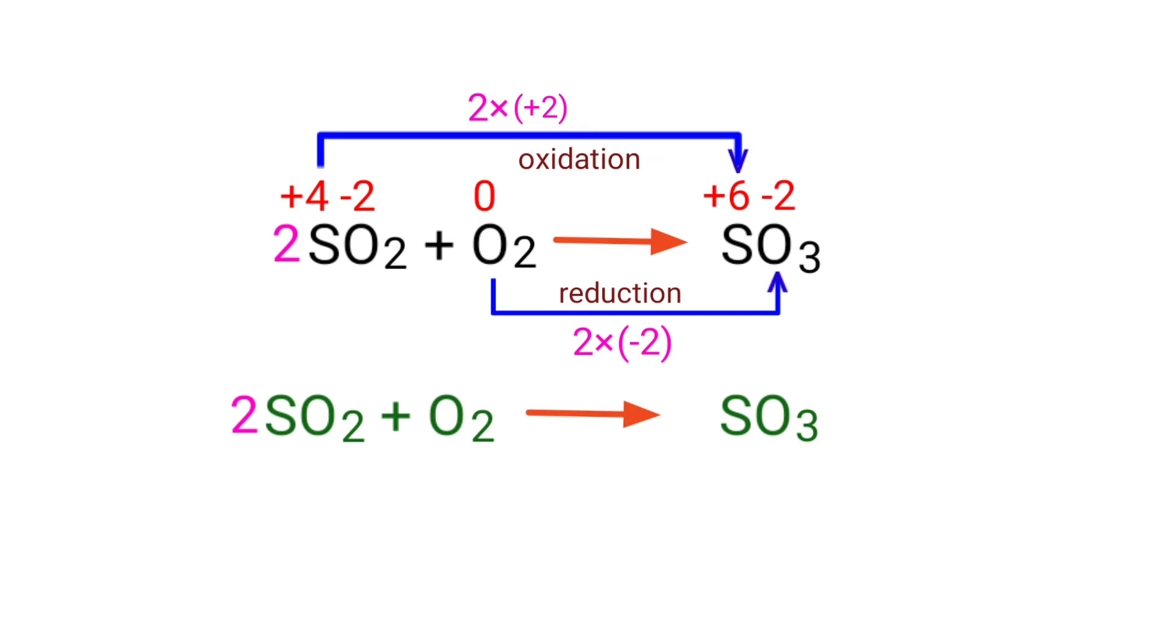Now you can balance the number of atoms in this equation. In the reactants side, there are two sulfur atoms and six oxygen atoms present. On the products side, there is one sulfur atom and three oxygen atoms present.